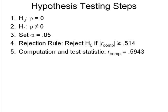Now we have to make a decision. Our RComp is .5943, and that's the absolute value of our RComp as well. So our rejection rule, step four, said reject H0 if our RComp is greater than or equal to .514. And it is, so we get to reject our H0.